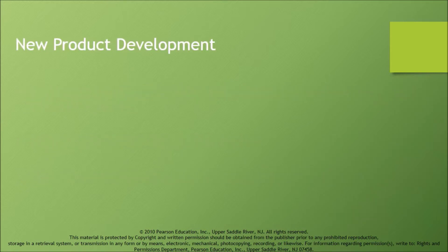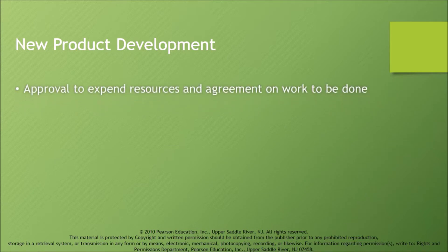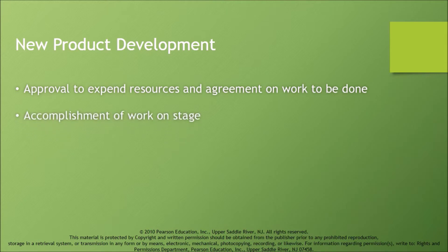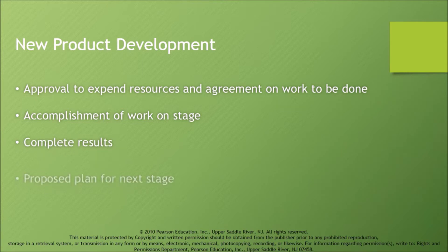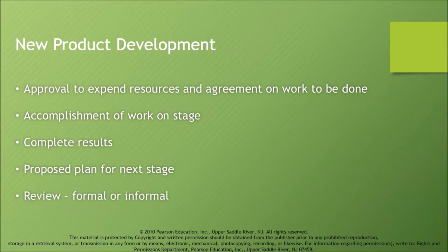New product development involves approval to expend resources and agreement on work to be done, accomplishment of work on stage, complete results, proposed plan for next stage, and review — formal or informal.